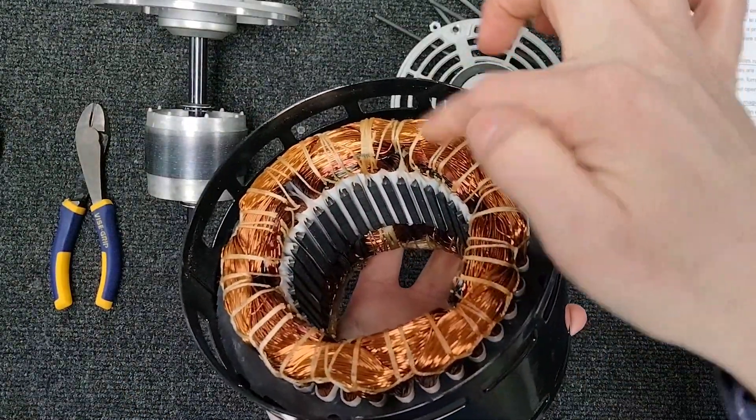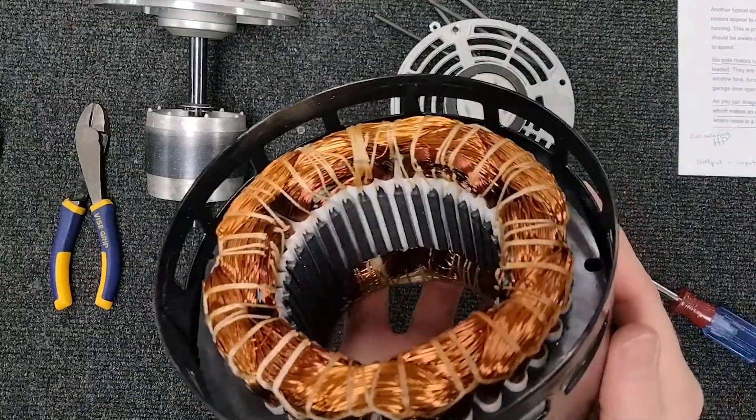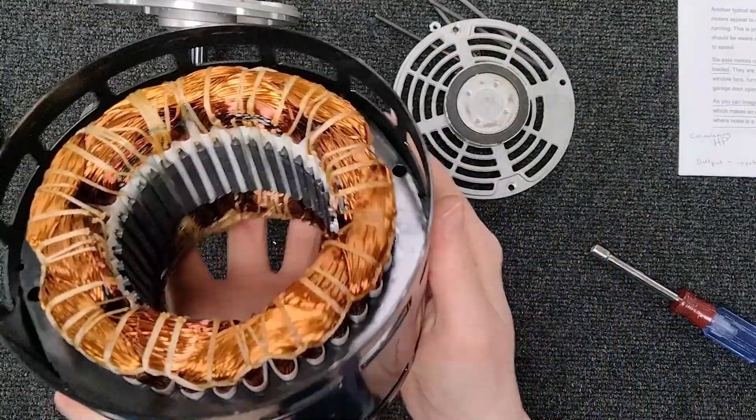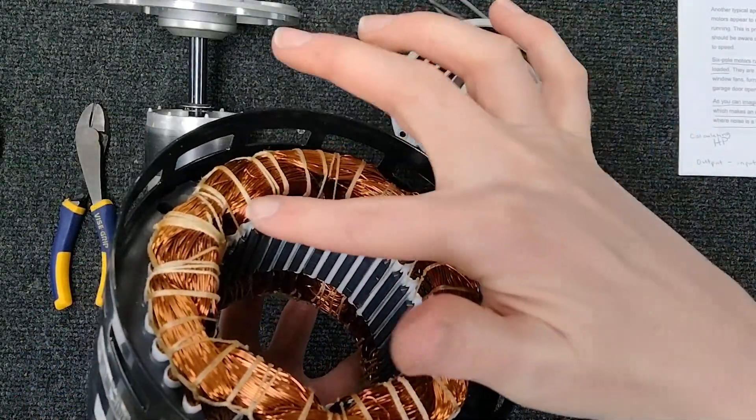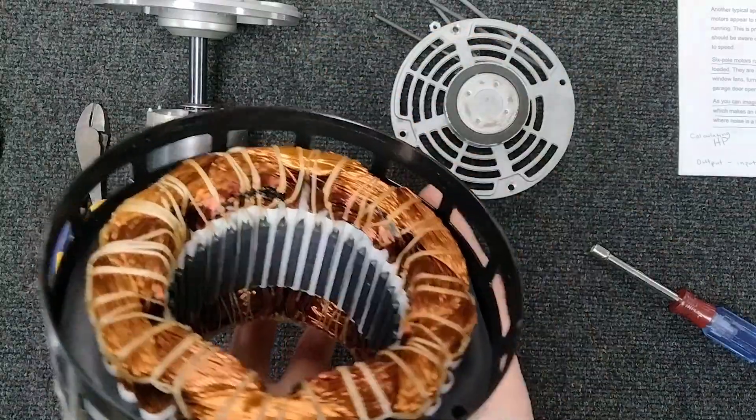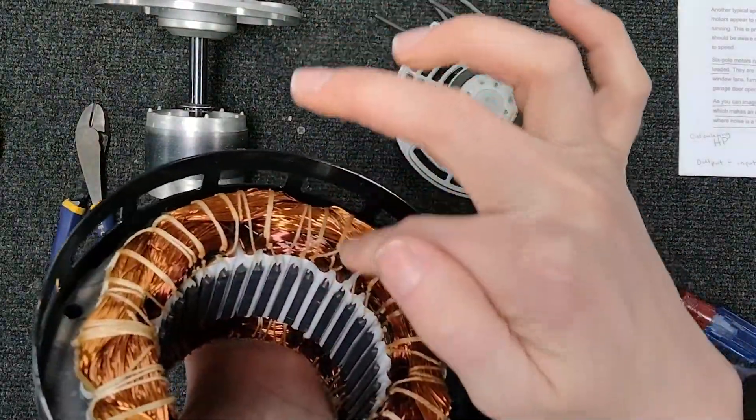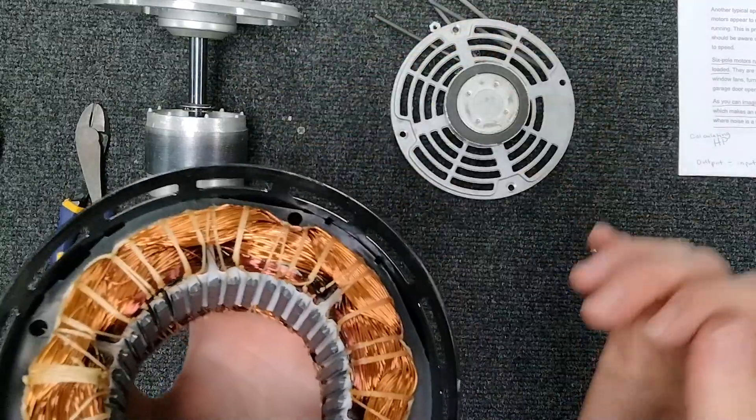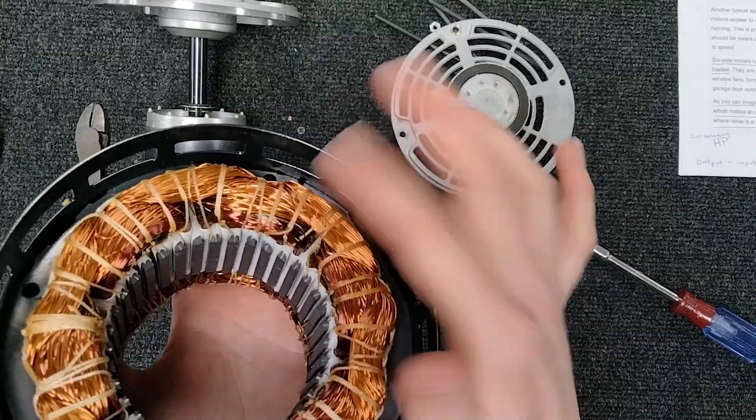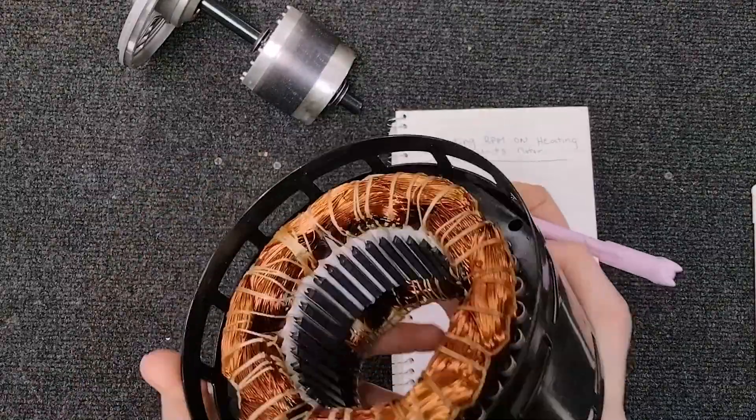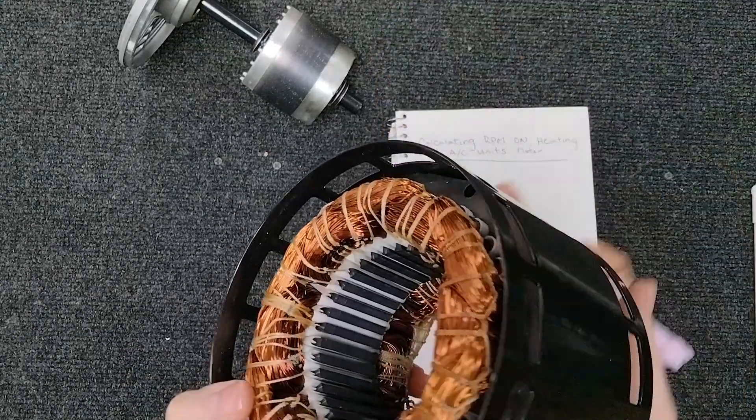So here are our windings, our poles. Each one of these windings here is a pole. So what we're doing is counting each one of these bundles, these loops, to get the poles and calculate our RPM. We're going to go in here and count from loop to loop how many we have.